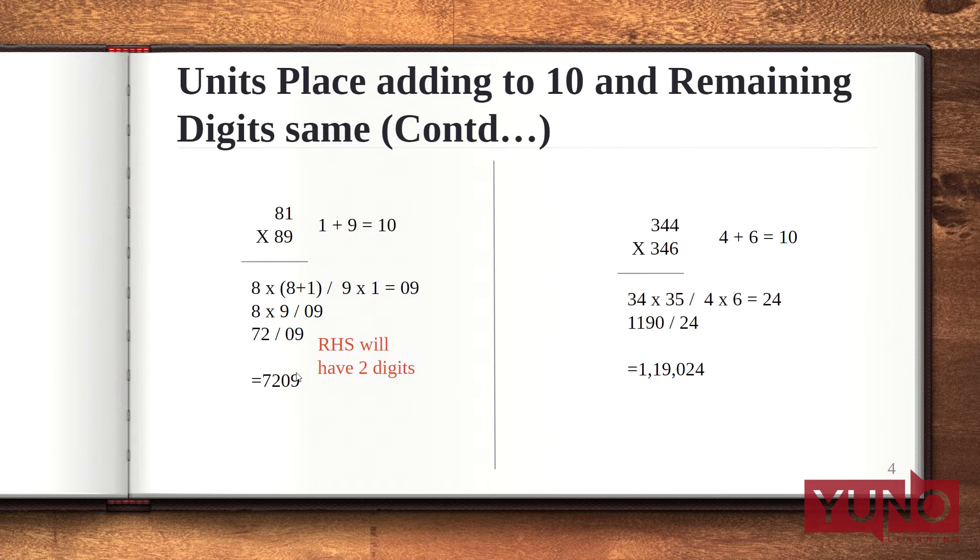Let us take an example of a 3 digit number: 344 multiplied with 346. Now here the rightmost digits 4 and 6 form the sum of 10. That is 4 plus 6 is 10 and the remaining digits, that is 3 and 4, are same. Now 4 and 6 multiplied together gives 24 and 34 multiplied with 35 is 1190.